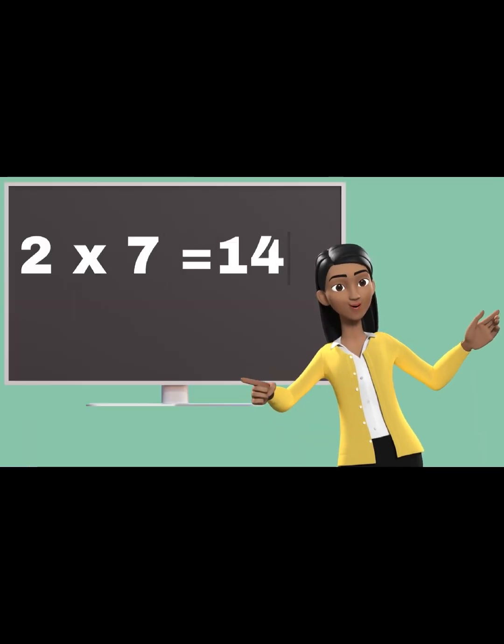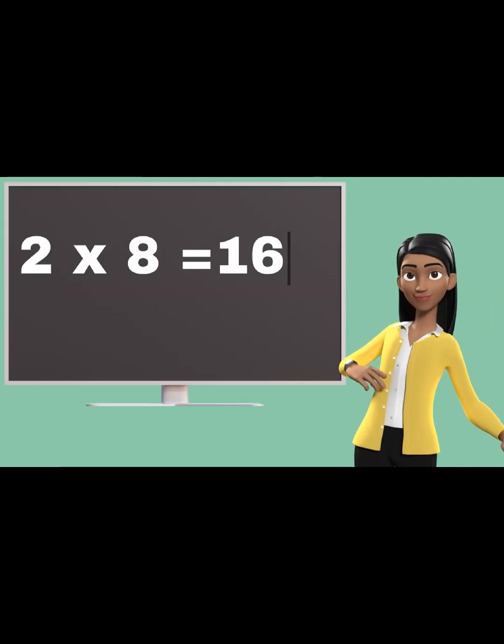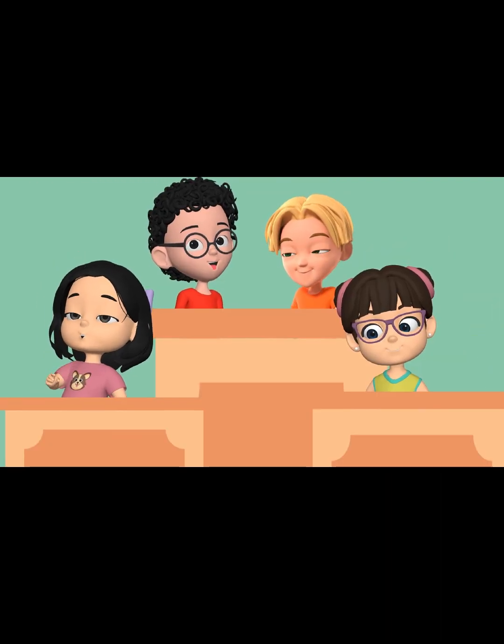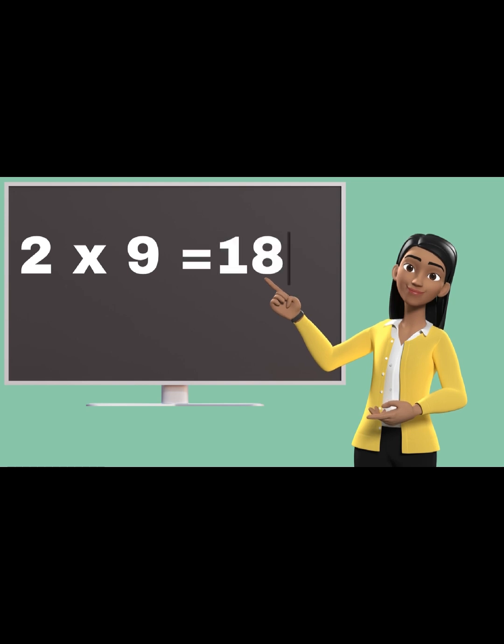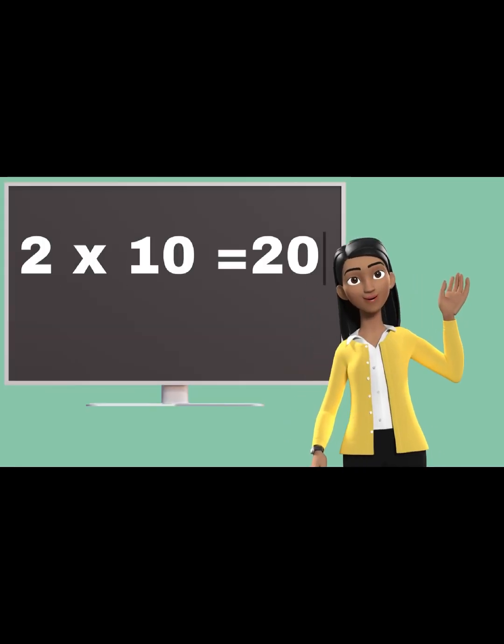Two sevens are fourteen. Two sevens are fourteen. Two eights are sixteen. Two nines are eighteen. Two tens are twenty.